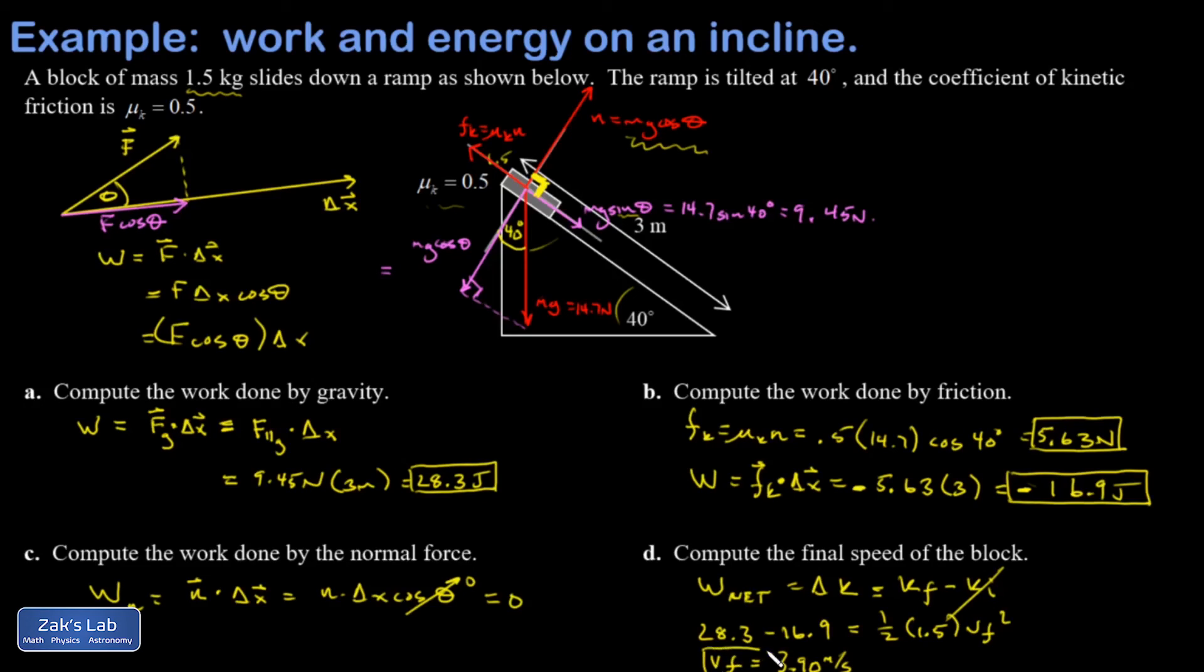So something you might want to do on your own time is repeat this problem by using Newton's second law and kinematics. And you're going to end up with exactly the same number for the final velocity. So right now what we're doing is just we're developing an alternative machinery for doing mechanics. This idea of energy, it just gives us like a different toolkit that is oftentimes more powerful than Newton's second law combined with kinematics.